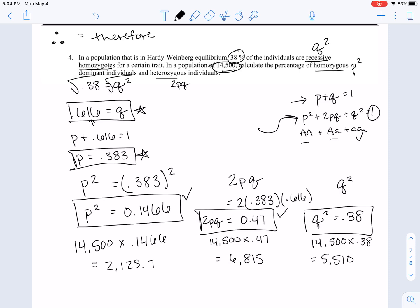If you did 14,500 times 0.1466, you're going to get about 2,125.7. Now you can't have 0.7 of an individual, but just rounding, right? 14,500 times 0.476, 6,815. And then you have 14,500 times 0.38, which gives you roughly 5,510. So that's individuals. So remember P squared is showing you AA. So that's how many individuals, that's the total actual number. This is the percentage. This is how many in that population.